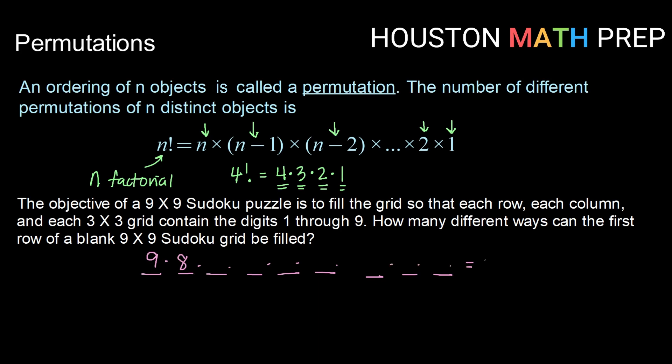What we would end up with is 9 times 8 times 7 times 6 times 5 and so on all the way down to 1, which is shorthanded as 9 factorial. Now, you can use your calculator to hit 9 factorial, and you will see that there are 362,880 ways we could arrange the numbers 1 through 9 in those slots.